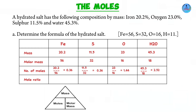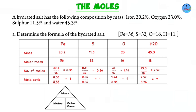Now the last column: mole ratio. We look at the four values obtained — 0.36, 0.36, 1.44, and 2.52. The smallest is 0.36, so we divide all four values by 0.36. Iron and sulfur each give 1, oxygen gives 4, and water gives 7. So the formula for this hydrated salt has 7 moles of water of crystallization.